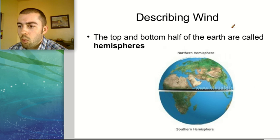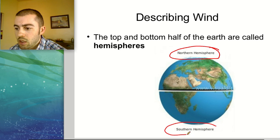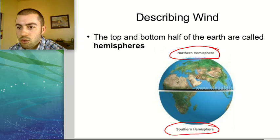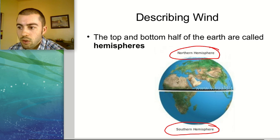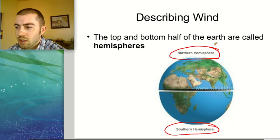When describing wind, it's important to know about hemispheres. The top half of the Earth is the northern hemisphere and the bottom half is the southern hemisphere. In different sections of the Earth wind behaves differently — the northern hemisphere has different wind directions than the southern hemisphere, and even within the northern hemisphere different regions have different wind directions.